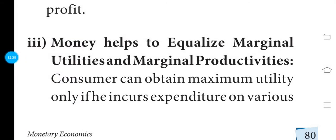Money helps to equalize marginal utility and marginal productivity. If a consumer seeks maximum utility, money allows him to allocate small amounts to equalize marginal utility across purchases.